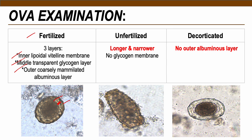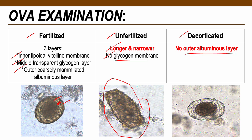Unfertilized eggs are longer and narrower, with some having an oblong shape. The only difference is that unfertilized eggs lack the middle glycogen membrane. Unfertilized eggs are usually produced when female worms have no male counterpart. Decorticated eggs may be fertilized or unfertilized, but lack the outer albuminous layer — appearing transparent on the outside compared to a normal fertilized egg.